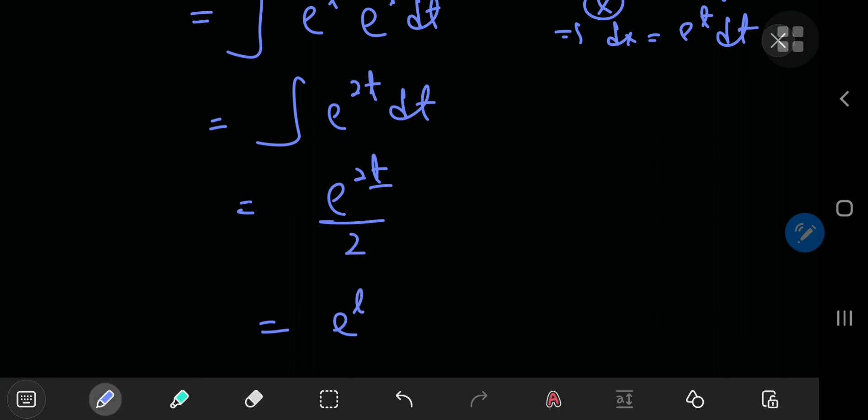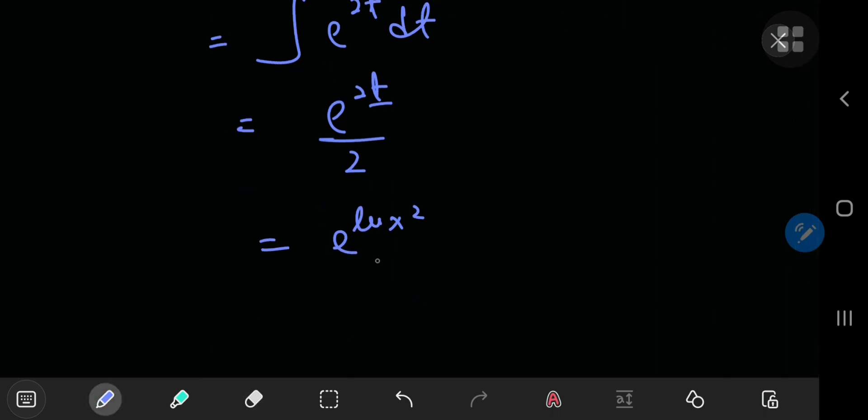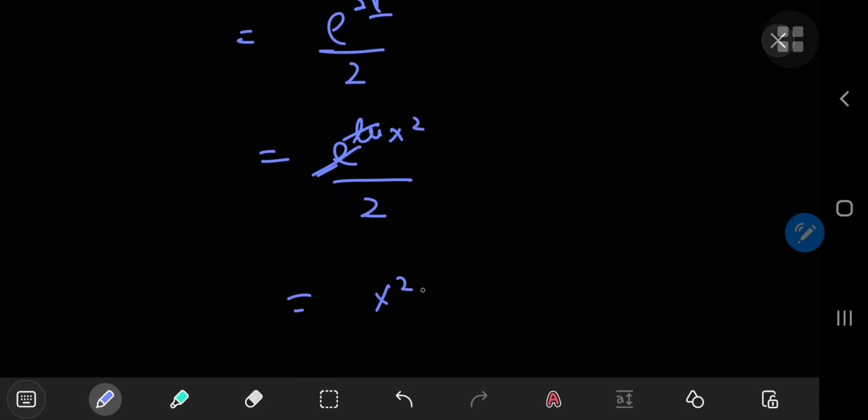So you can make use of some basic properties of the natural logarithm that everybody knows at this stage, and the e and the natural log are going to cancel out and you're left with x squared by 2 plus C.